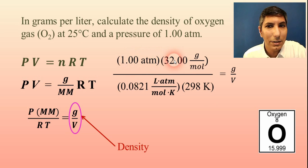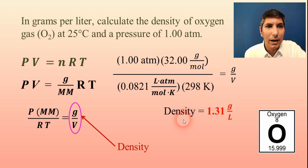1 times 32 divided by 0.0821 divided by 298. And so I get an answer that the density of oxygen at these conditions will be 1.31 grams per liter. So make sure that you're getting that answer as well.